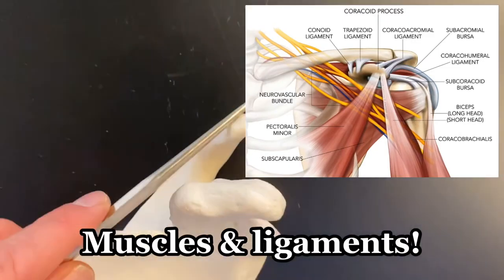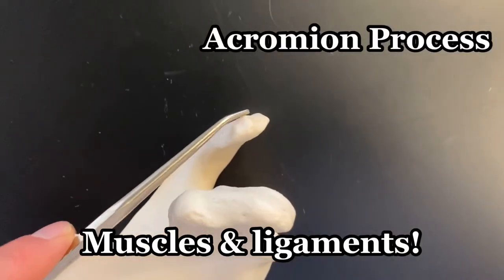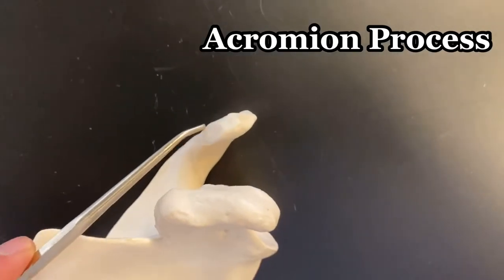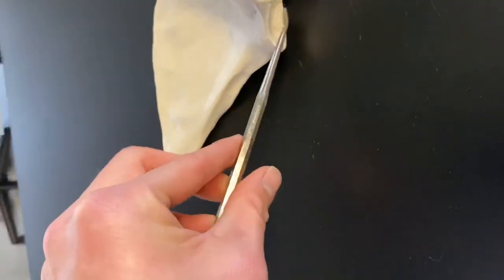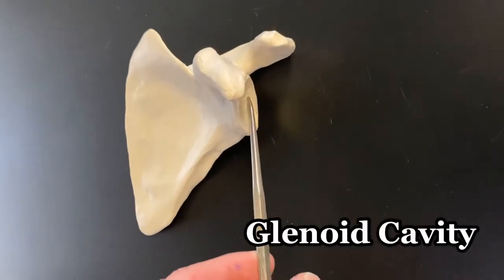It is different from the acromion process. Which we can now see from an anterior view. Acromion process. And that glenoid cavity where the humerus would sit.